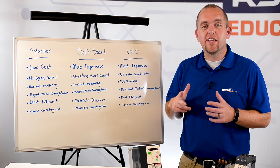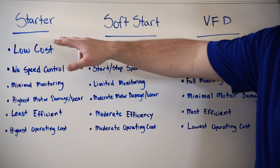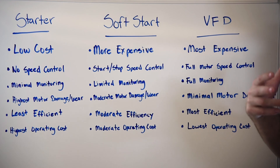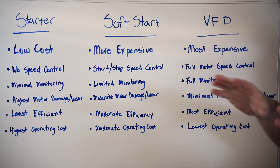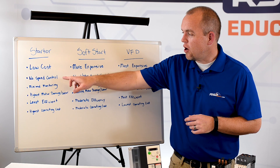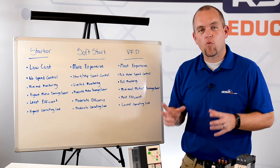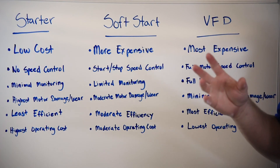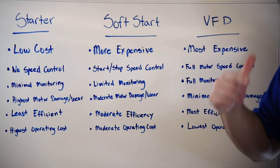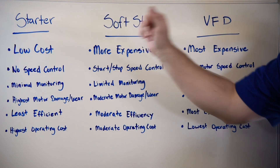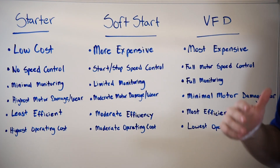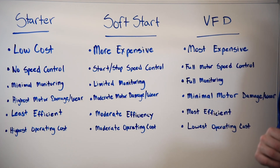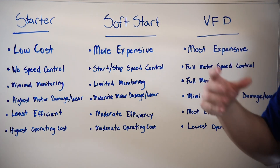Now let's compare the three different options. First, we have the starter, which is going to be the lowest cost option, all the way up to the VFD, which is going to be the most expensive, with the soft starter falling somewhere in between. Starters offer no speed control — they ramp up quickly and stay at full speed the whole time they're running. Soft starters give us a gradual ramp up in speed until they get to full speed, then operate much like a starter. A VFD gives us full motor speed control, allowing us to ramp up and down during the start and stop as well as the full run cycle.